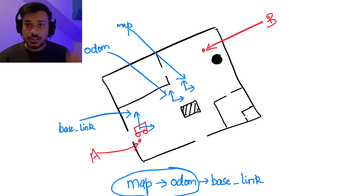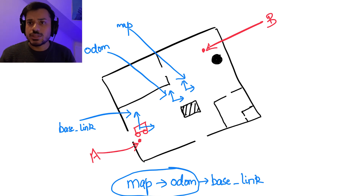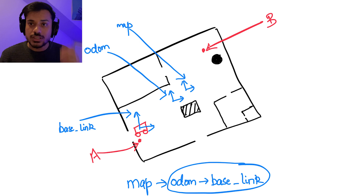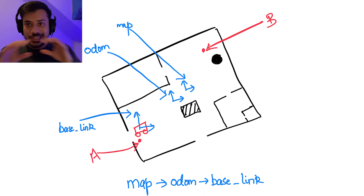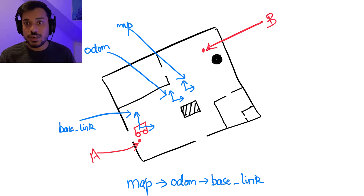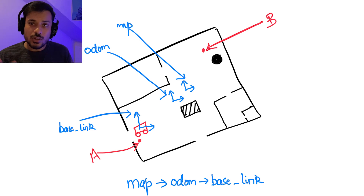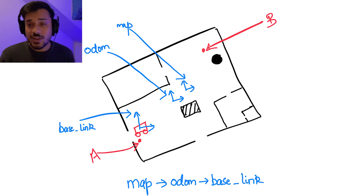The first part of the chain — the transform from map to odometry — is usually done using something like AMCL or GPS, so any global method. The second part — the transform from odometry to base link — is done using local methods like IMU and odometry. But why do we need this entire transformation chain? Why are we not satisfied with just encoder-based odometry from our robot? Because it is prone to drift.